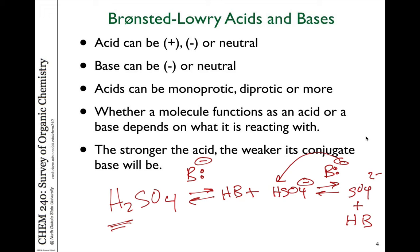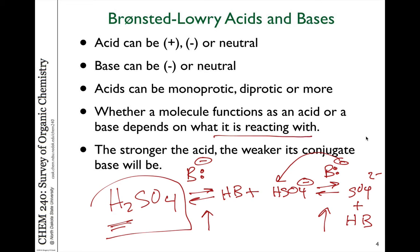So sulfuric acid is a diprotic acid. The acid strength for the first reaction and the second reaction will be different, but it can give up two protons given the right base. Whether a molecule acts as an acid or a base depends entirely on what it's reacting with — we'll see an example of that in a moment.